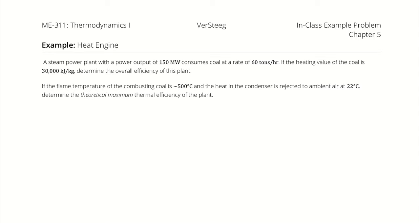A steam power plant with a power output of 150 megawatts consumes coal at a rate of 60 tons per hour. If the heating value of the coal is 30,000 kilojoules per kilogram, determine the overall efficiency of this plant.